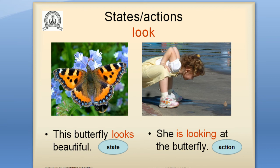Verb: look. 'This butterfly looks beautiful' — I describe the appearance, so it's a state verb. 'She is looking at the butterfly' — she is directing her eyes to look at something, so it's an action verb. In example 1 I describe the appearance — a state verb. In example 2 I direct my eyes to look at something — it's an action verb.